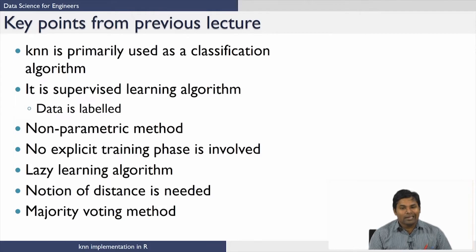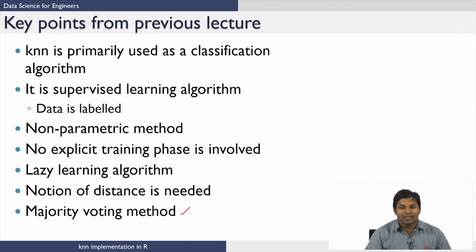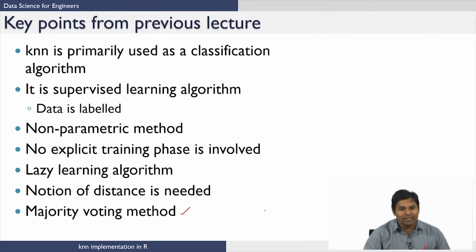Because we are dealing with K nearest neighbors, the notion of distance is important in this algorithm. The KNN algorithm works by majority voting. When you give a test point, we calculate the distance of that test point from all data points, arrange them in ascending order, choose the K nearest neighbors, and based on their votes, assign the class to the test data point.